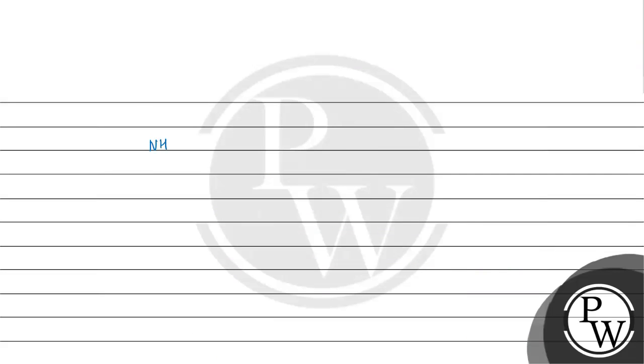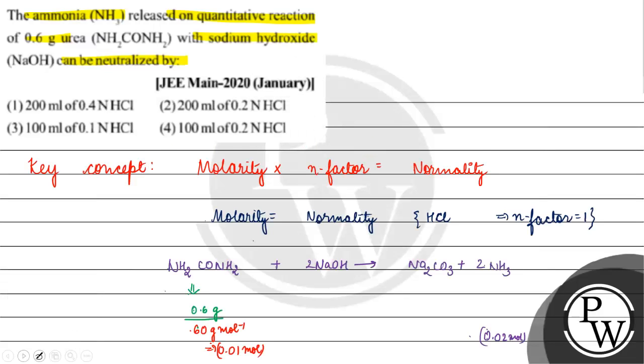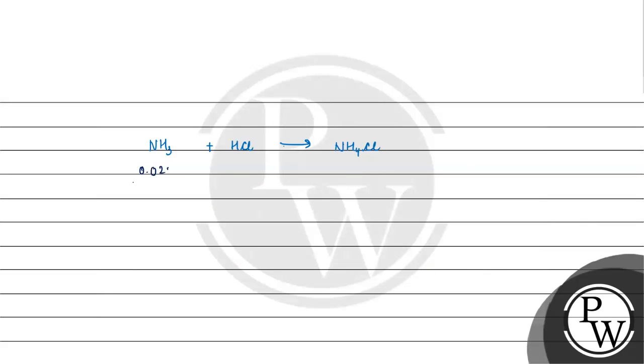Now, for the reaction where ammonia reacts with HCl to give NH4Cl, we have 0.02 mols of ammonia. Stoichiometrically, 1 mol ammonia requires 1 mol HCl, so 0.02 mols ammonia requires 0.02 mols HCl.